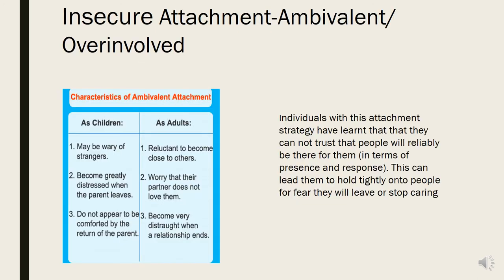Some children have what's called an insecure attachment pattern, and there are broadly two types. There's the ambivalent, or sometimes referred to as over-involved, type. In this pattern, the child becomes insecure about their attachment person — probably with good reason — because the attachment figure has been unpredictable in their availability when the child is distressed, either in their physical or emotional presence. In order to attract attention, the child has learned to exaggerate their emotional expression, expressing an excessive amount of unease or crying when their need for the attachment figure is activated.